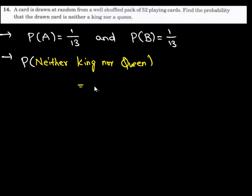Which is equal to 1 minus probability of getting a card on which we have either king or queen.